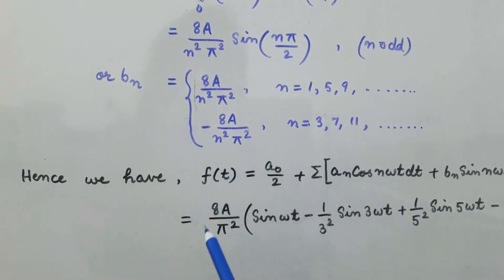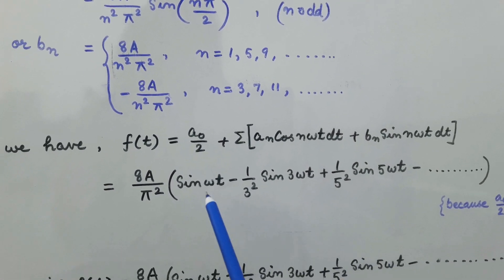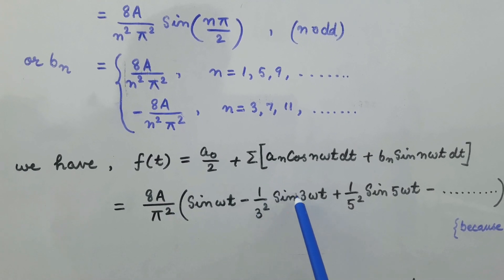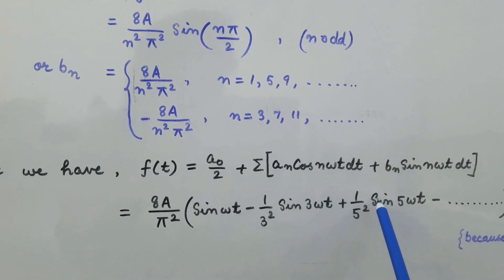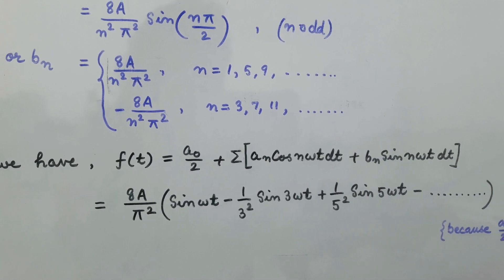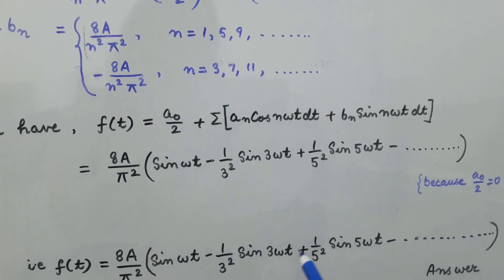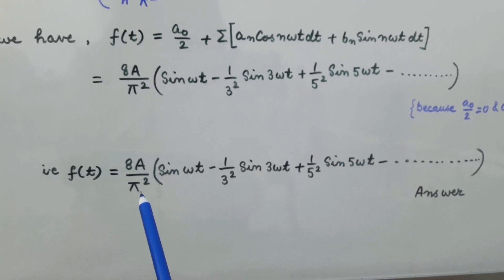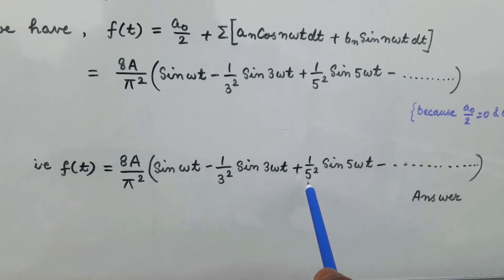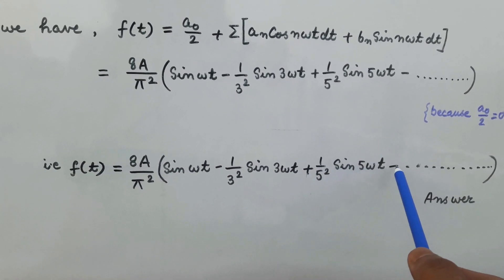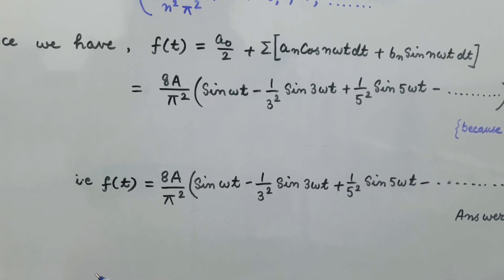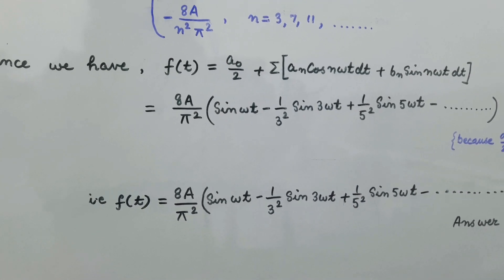Substituting these values, the equation comes out to be f(t) = (8a/π²) × [sin(ωt) − (1/3²) sin(3ωt) + (1/5²) sin(5ωt) − ...]. The final value of f(t) = (8a/π²) × [sin(ωt) − (1/9) sin(3ωt) + (1/25) sin(5ωt) − ...], and so on. This is how we find the Fourier series expansion of a given periodic triangular wave.